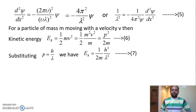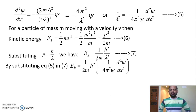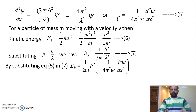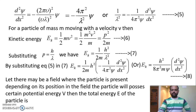In equation seven, we have the term 1/λ², for which we substitute equation five. Substituting, the kinetic energy Ek equals (1/2m) times h² times [−1/(4π²ψ) times d²ψ/dx²]. Multiplying through, we get Ek equal to −h²/(8π²m·ψ) times d²ψ/dx². We call this equation number eight.